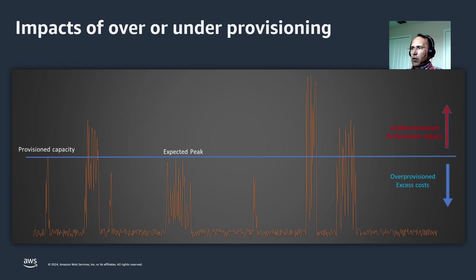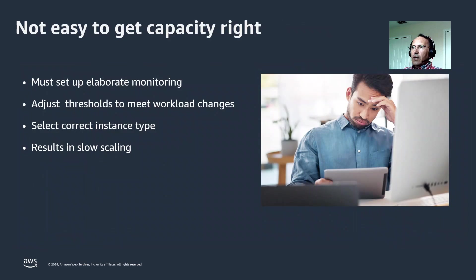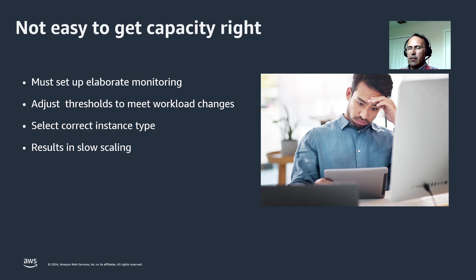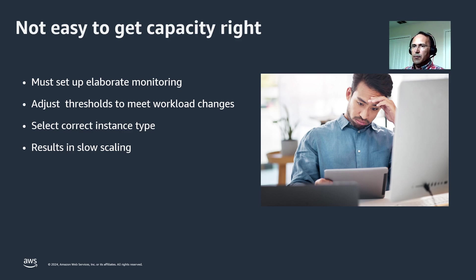On the other hand, there are occasions when there are spikes in the workload and there's not enough capacity, so the workload is going to suffer. That's why capacity planning is not necessarily easy. You must have elaborate monitoring in place. You have to adjust the thresholds, and you have to have the right thresholds for your workload as it changes. Of course, all this depends on having selected the correct instance type. ElastiCache provisioned does support auto-scaling for a couple of instance types, but you have to set up the monitoring and thresholds beyond basic CPU and memory utilizations. The scaling may not be as fast as you might think — hardware has to be acquired, configured, and added to the cluster.